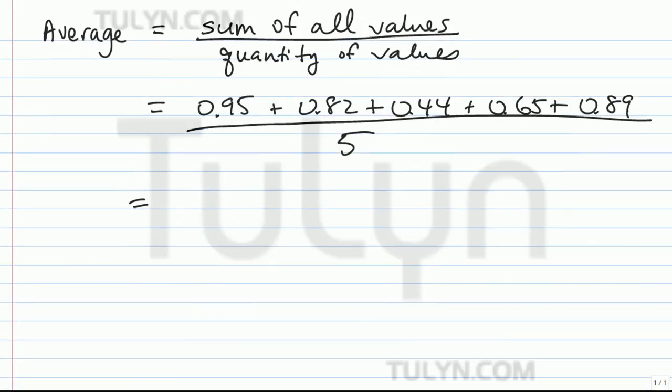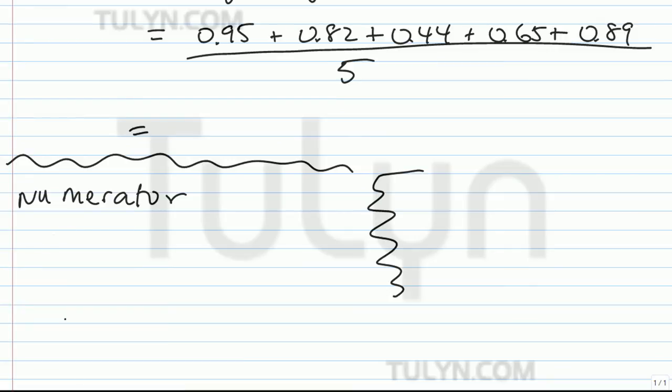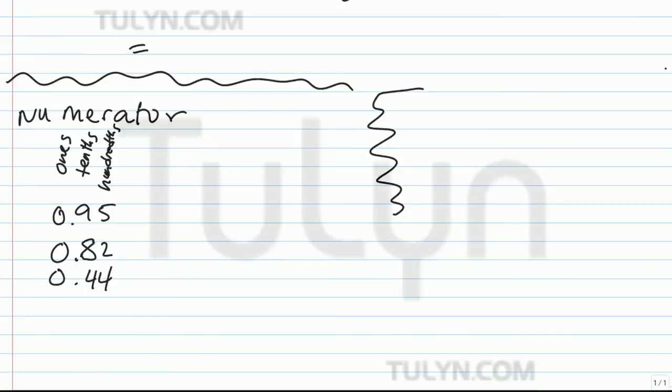Whenever we add, we're just working on our numerator right here. Whenever we add decimal values, we're going to line up the places. So we'll have our ones place, our tenths place, and our hundredths place. So we've got 0.95, 0.82, 0.44, 0.65, 0.89.